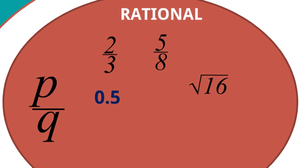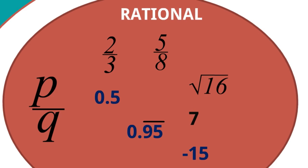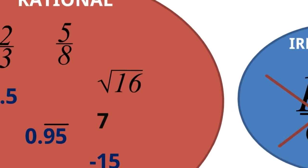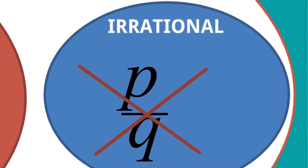Root 16 equals 4, which we can easily write in p/q form. Similarly, 7, minus 15 — all can be written in p/q form. And 0.9 repeating means 95/99, so these are all rational numbers.